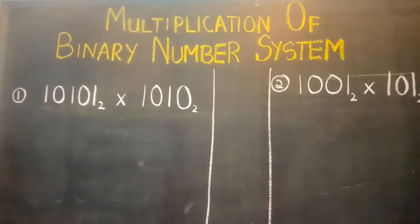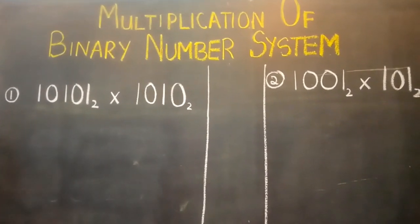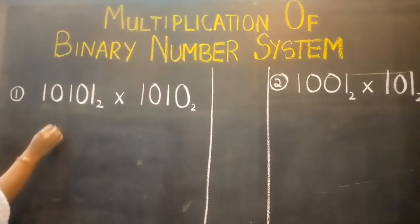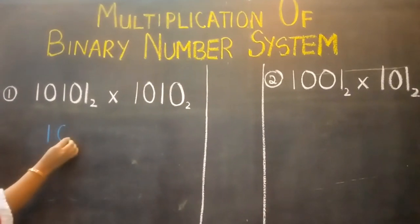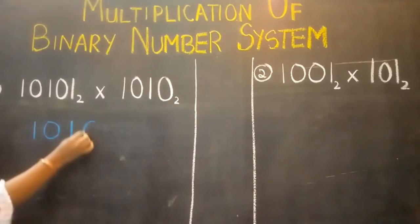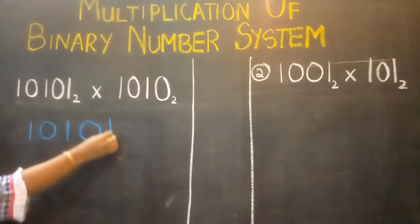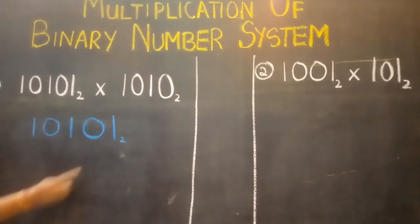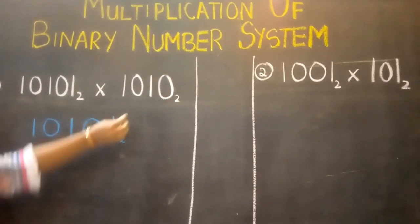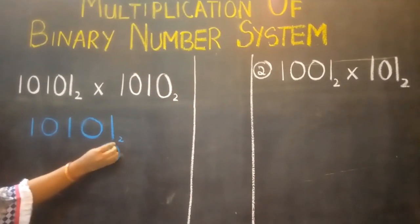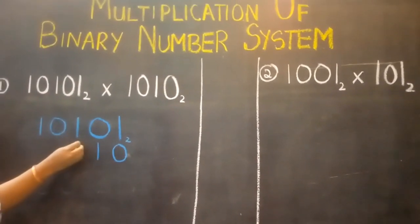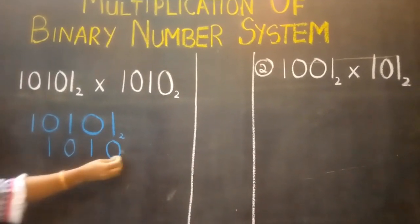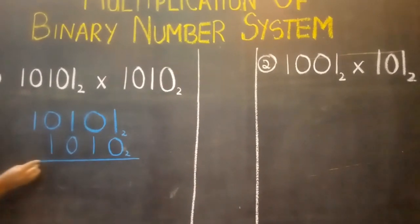We will write the binary numbers vertically according to their place value. So we will write the first binary number: 1, 0, 1, 0, 1 base 2. Now we will write the second binary number below this: 0, 1, 0, 1 base 2.